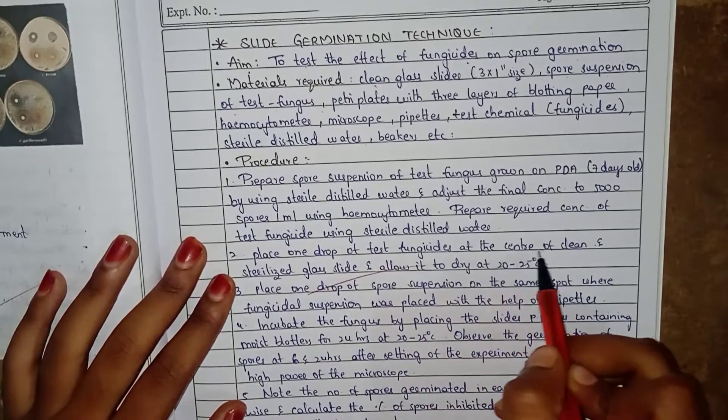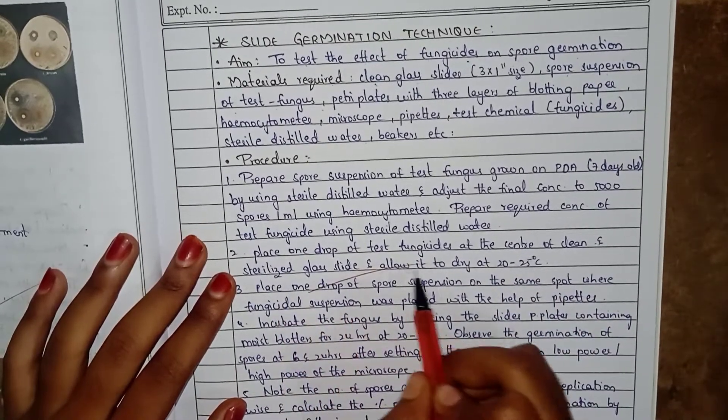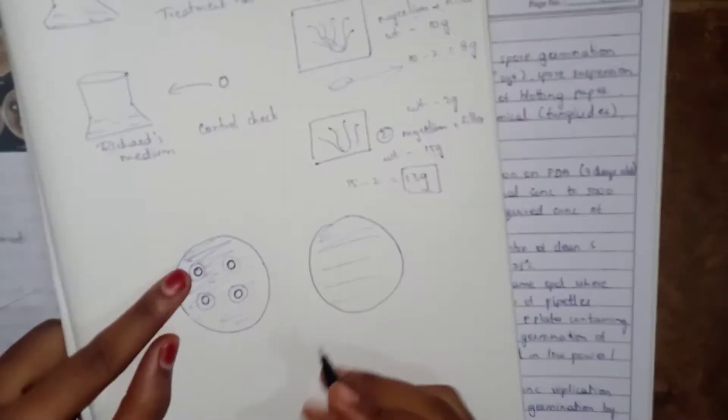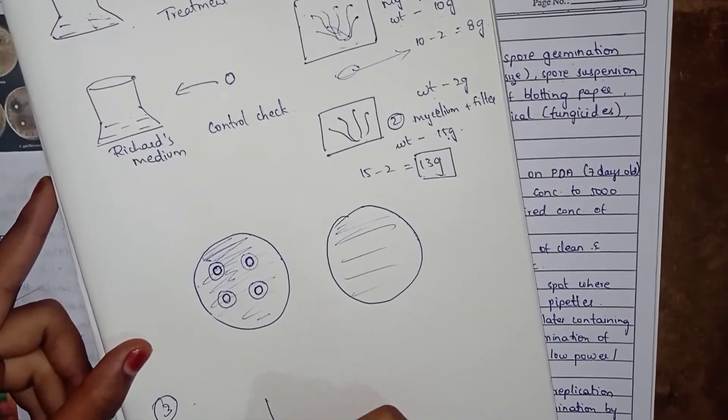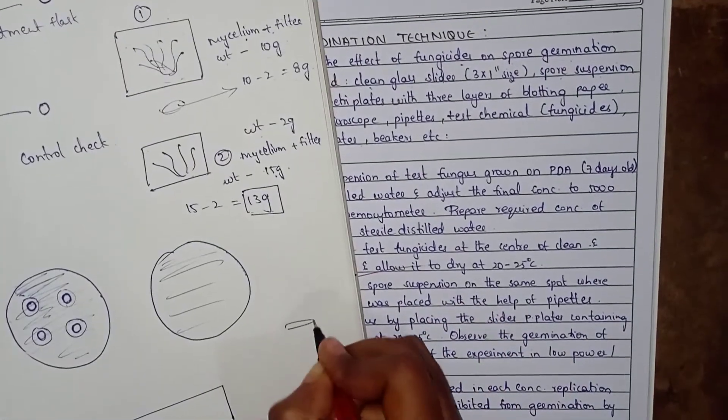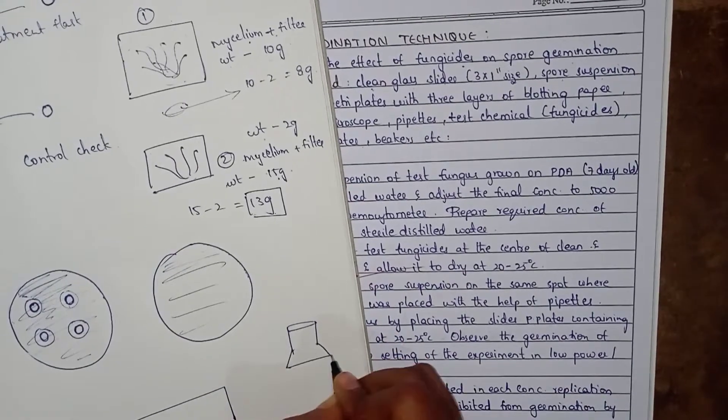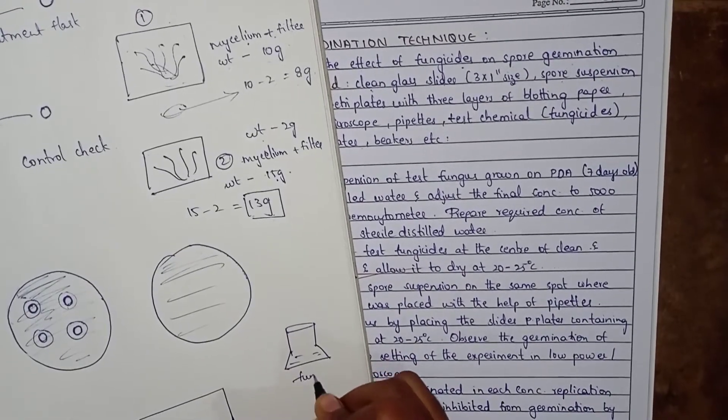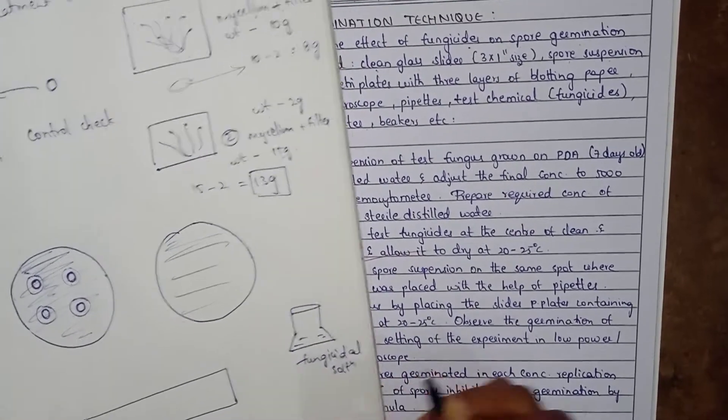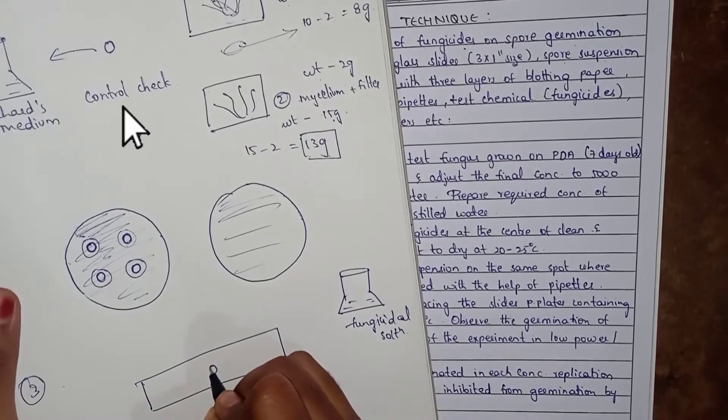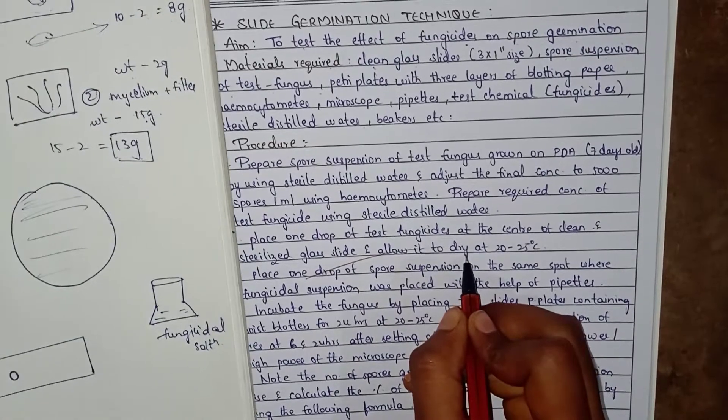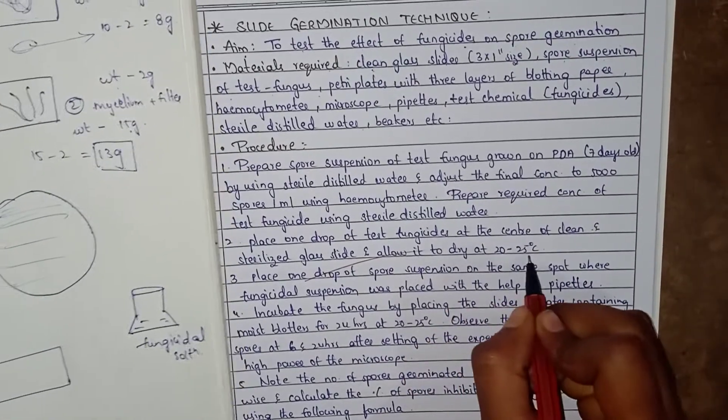Place one drop of test fungicide at the center of a clean glass slide and allow it to dry at 20 to 25 degrees Celsius. Take the glass slide, prepare the fungicide solution, and place a drop.